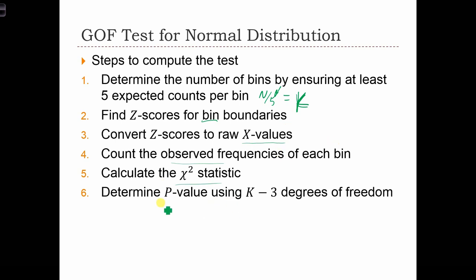We can look up the p-value of that chi-squared statistic using k minus 3 degrees of freedom, and we can come to a conclusion about the test.